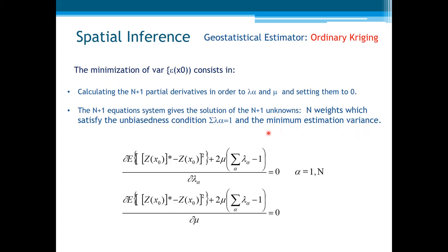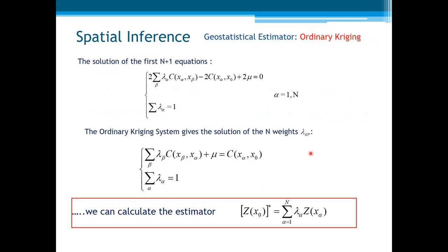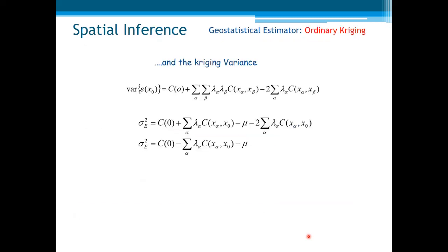The n weights satisfy the unbiasedness condition and the minimum estimation variance. Note that we know this is a minimum because the estimation variance is a convex function. The solution of the n plus one equations gives us the n weights lambda alpha plus the Lagrange parameter. So the ordinary Kriging system gives the solution of those n weights. Once we know the weights, we can calculate the estimator — our final goal, the ordinary Kriging estimator — and also the Kriging variance, which is derived from the weights calculated by the Kriging equations. The Kriging variance can be written simply as a function of the covariance between samples.